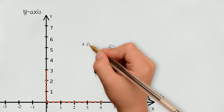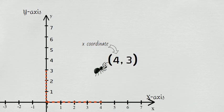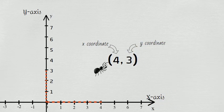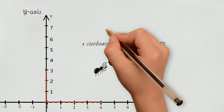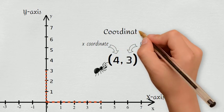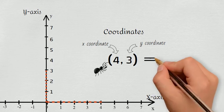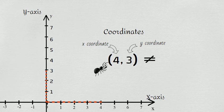In this number pair, the first one is x-coordinate, and the second is y-coordinate. In the math world, we call these ordered pairs coordinates. And be careful, the order matters. 4,3 is not the same as 3,4.